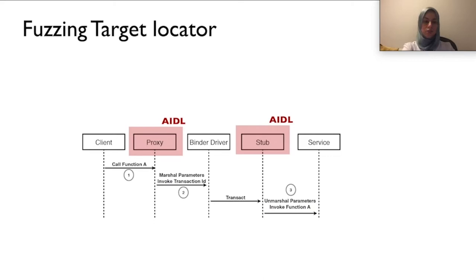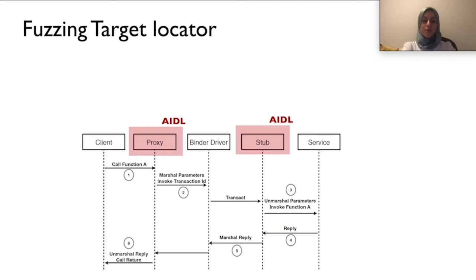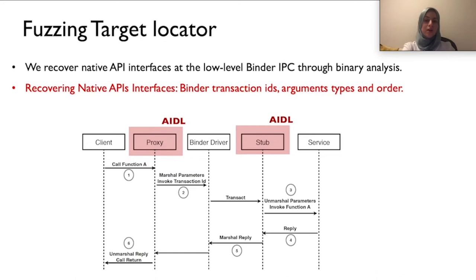While the process of identifying Java-level APIs is straightforward, identifying native APIs is more challenging because the binaries are largely stripped. To solve this, we perform a lightweight binary analysis. Specifically, we recover the transaction IDs, argument types, and order from the native binaries — essentially replicating the client proxy transactions to invoke the target API.